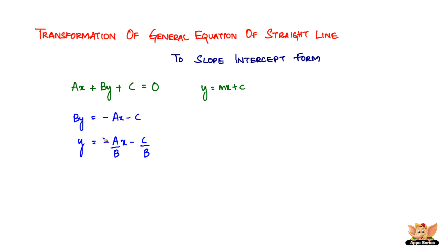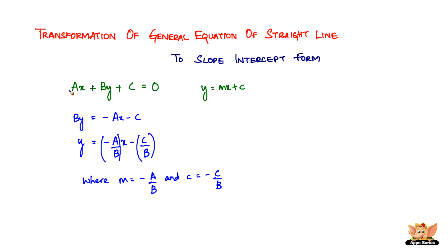You can use brackets if you want. Here m, the slope, equals minus a by b, and the intercept c equals minus c by b. So the slope equals the negative of the coefficient of x divided by the coefficient of y — because a is the coefficient of x and b is the coefficient of y. And the intercept c equals minus c by b, where c is the constant and b is the coefficient of y.